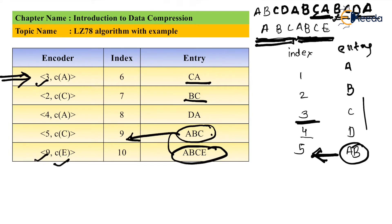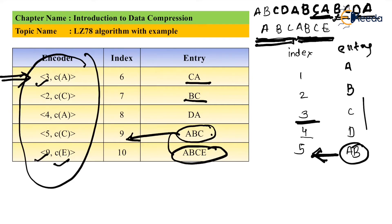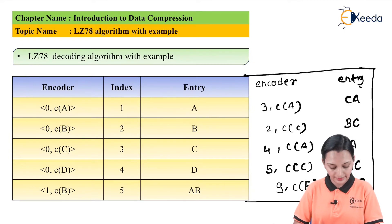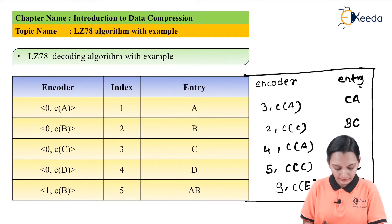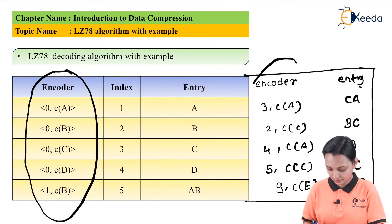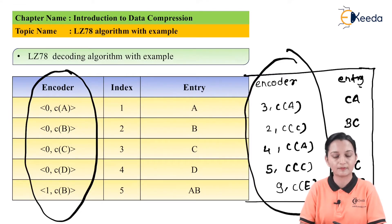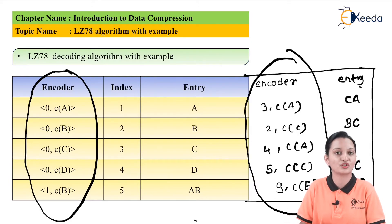Our encoded output, if you observe, is this column. You require to take all these 10 encoded outputs, and you can easily decode the data and get the original message with the help of the decoding technique of LZ78. In the decoding side, we take the output obtained from the encoded data and verify whether the encoded output is correct or not. This is the data now in hand — the output of the previous encoding example — and what we have to find out are the original entries.